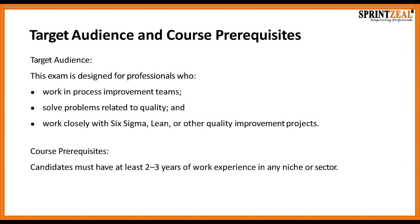This course is designed for professionals who work in process improvement teams, solve problems related to quality, and work closely with a Six Sigma Lean or other quality improvement project. In terms of prerequisites, it is recommended that candidates have at least two to three years of work experience in any sector that would benefit from improved quality and reduction of defects or errors.